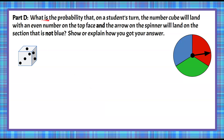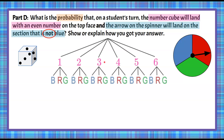Now let's do Part D: what is the probability that the number cube lands on an even number and the spinner lands on a section that is not blue? Not blue means it will be red or green. We'll use the tree diagram from the previous part. We still have 18 possible outcomes. The even outcomes for the number cube are 2, 4, and 6 — so 3 of our 6 rolling outcomes are even.